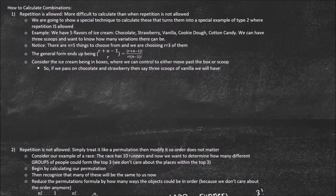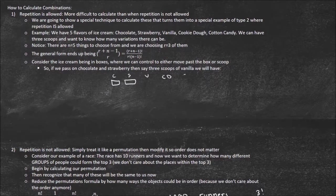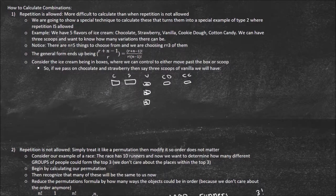The reason it's a combination and not a permutation is because if I get chocolate on top, chocolate on the bottom, and strawberry in the middle, that's the same as two scoops of chocolate on top and strawberry on the bottom — I get the same ice cream. So I want to consider the ice cream being in boxes where I can either move past the box or scoop. Each box represents a flavor: chocolate, strawberry, vanilla, cookie dough, and cotton candy. I'll highlight when I pick up an ice cream scoop — say I didn't get chocolate or strawberry, I got vanilla, then two more vanillas, so my cone is full, and I passed on cookie dough and cotton candy.